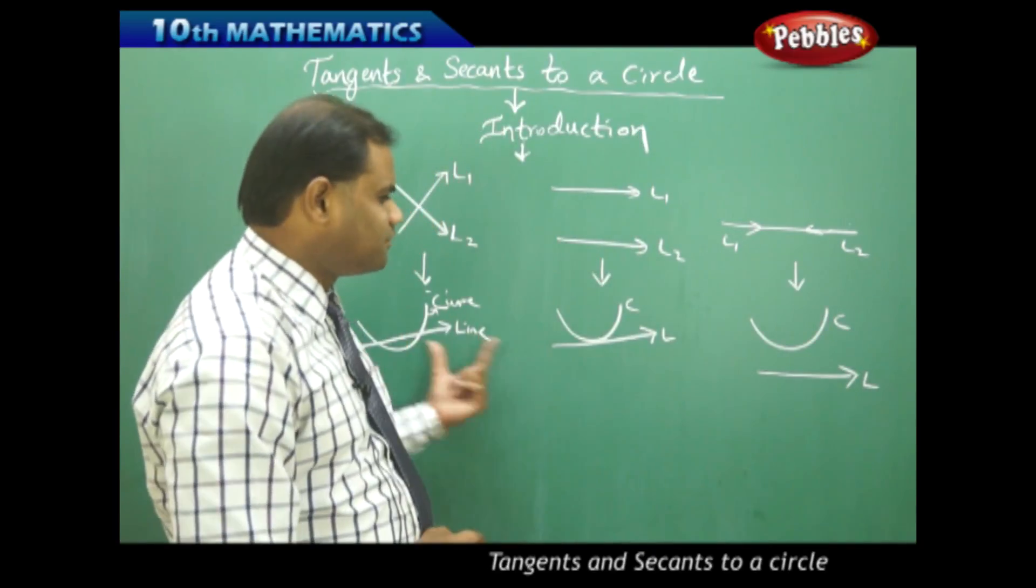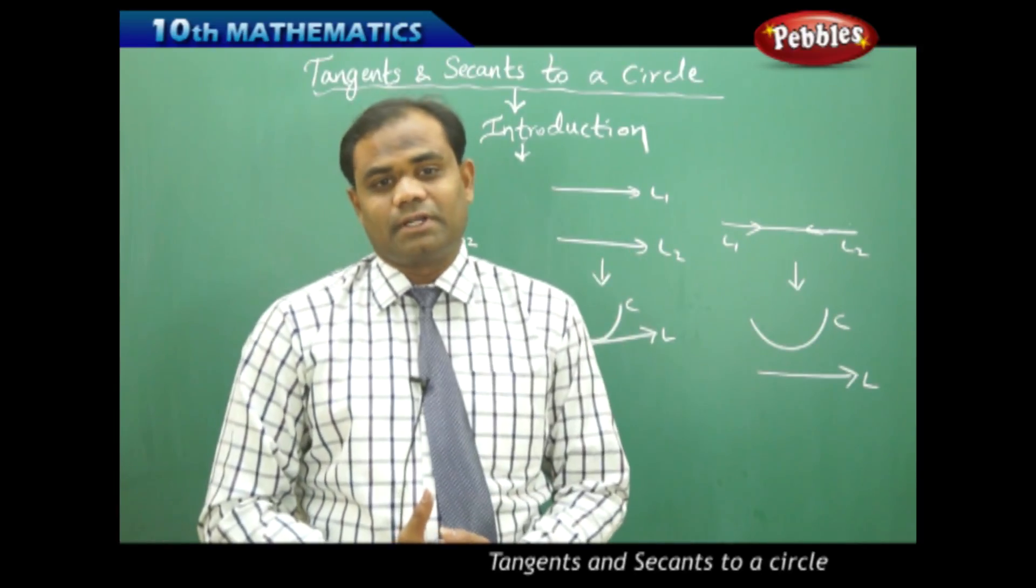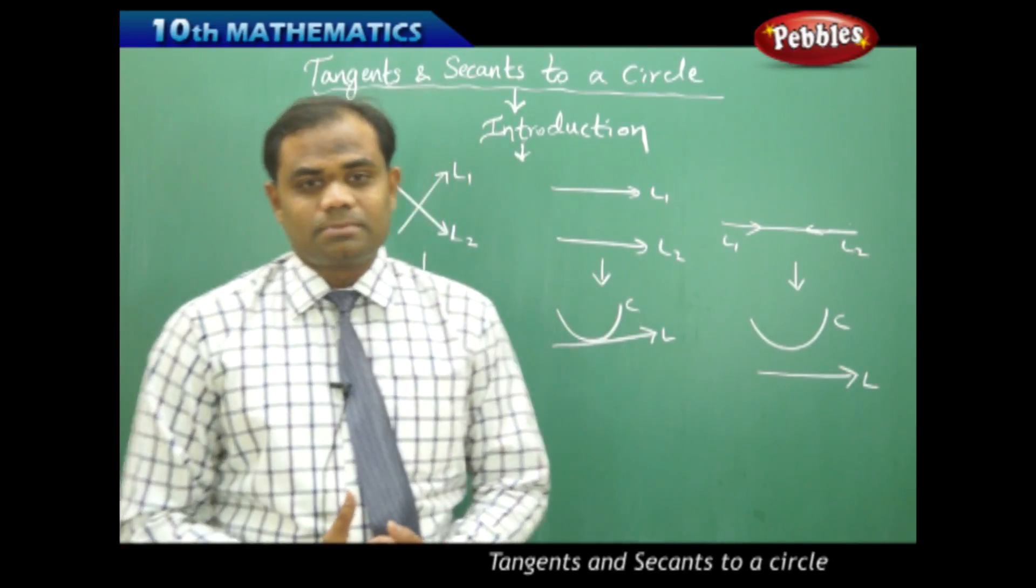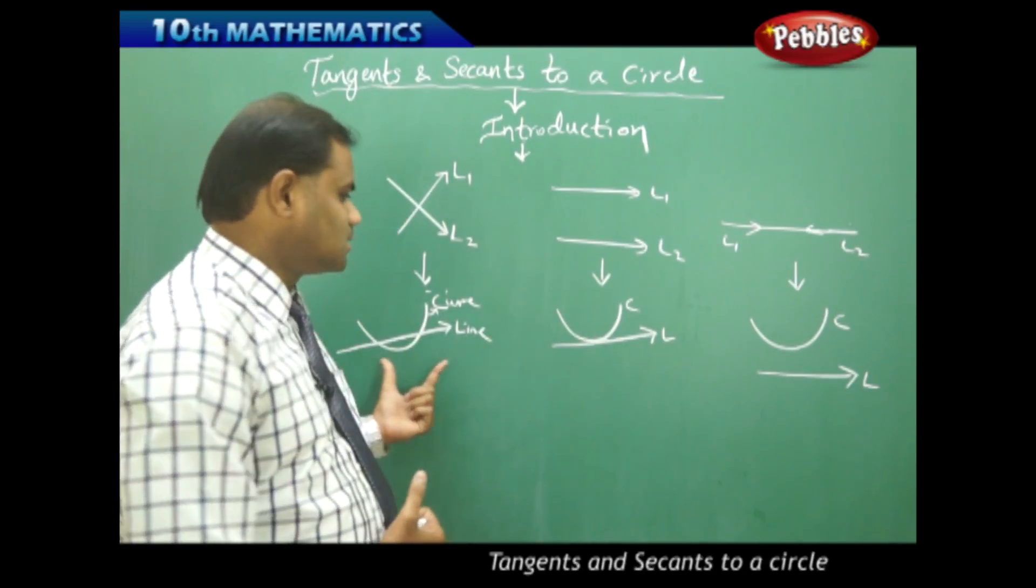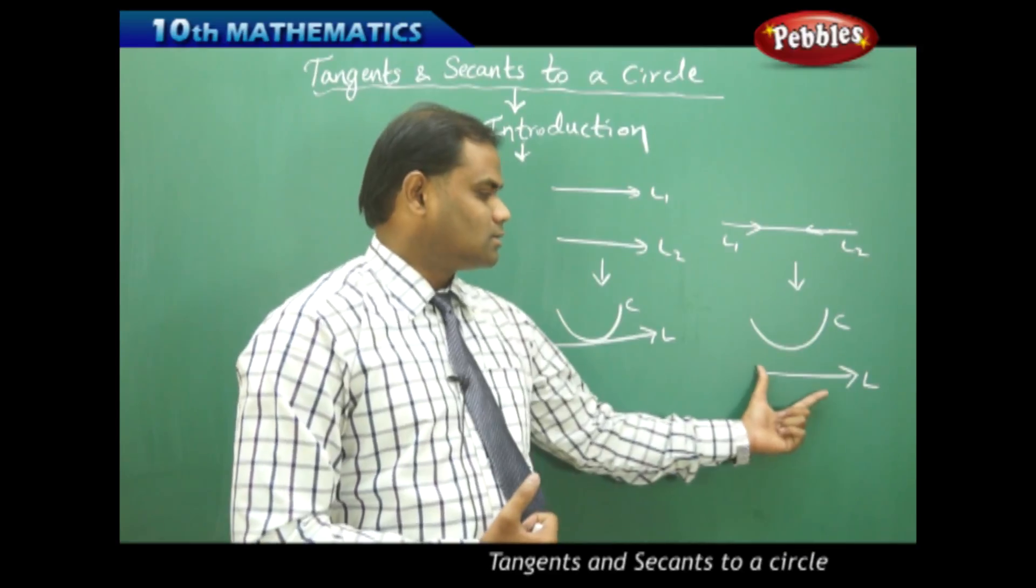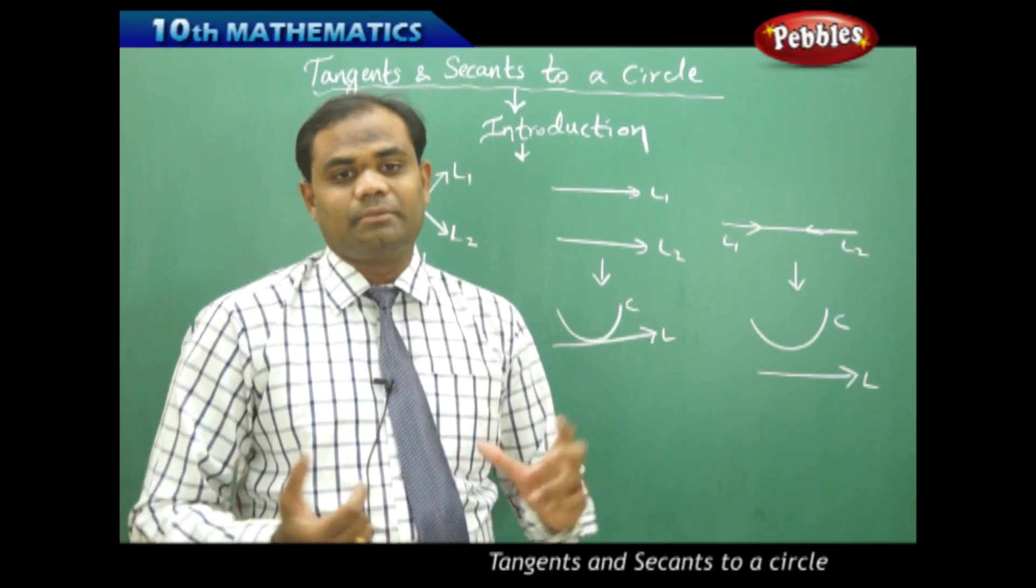This is how we have three different cases which we can compare with the three different cases of straight lines. So the possibilities are that the curve and a line may intersect, may not intersect, or may touch at one point.